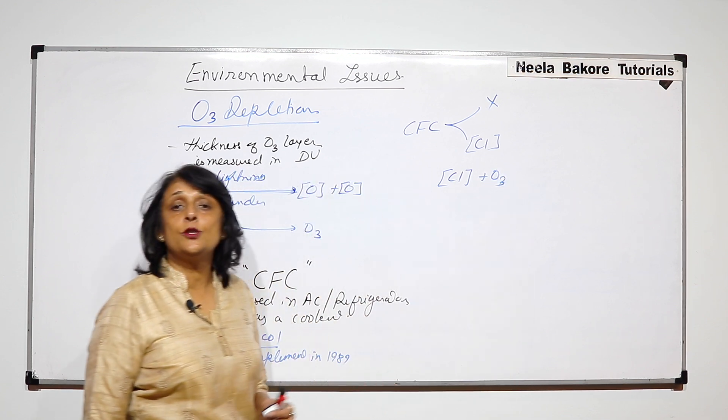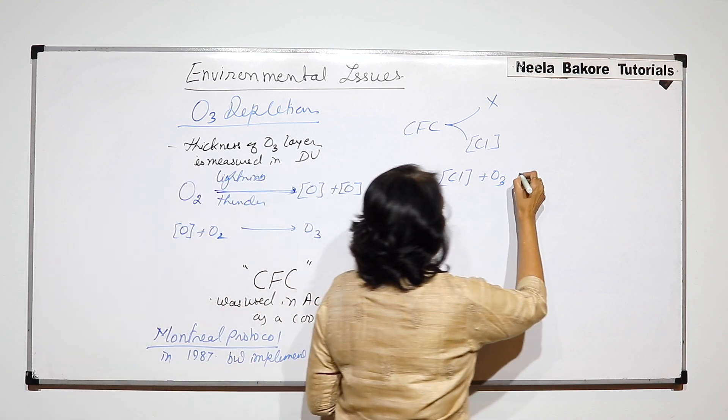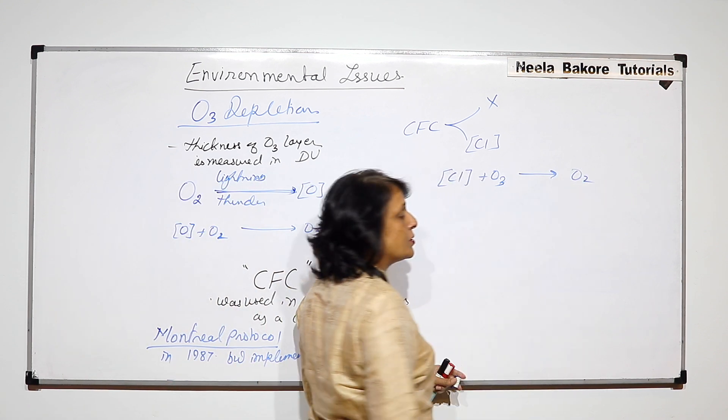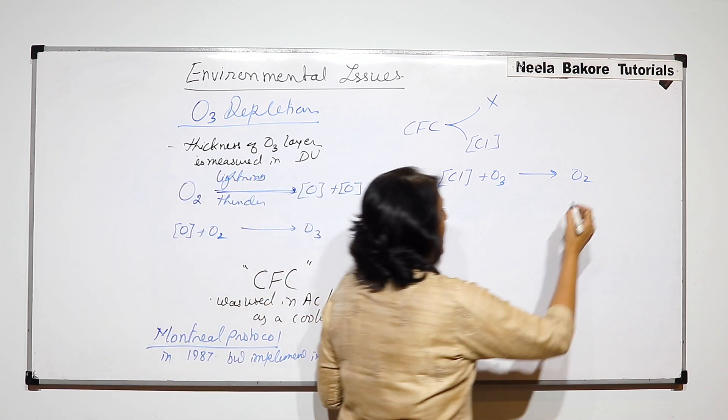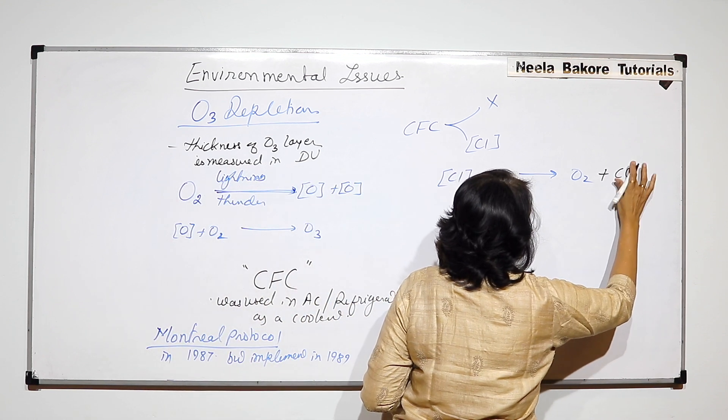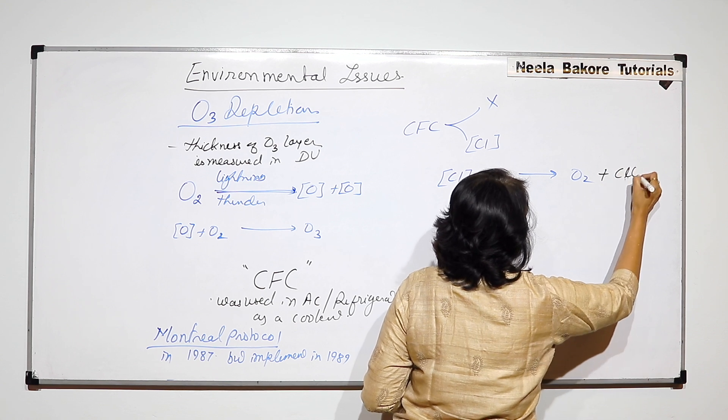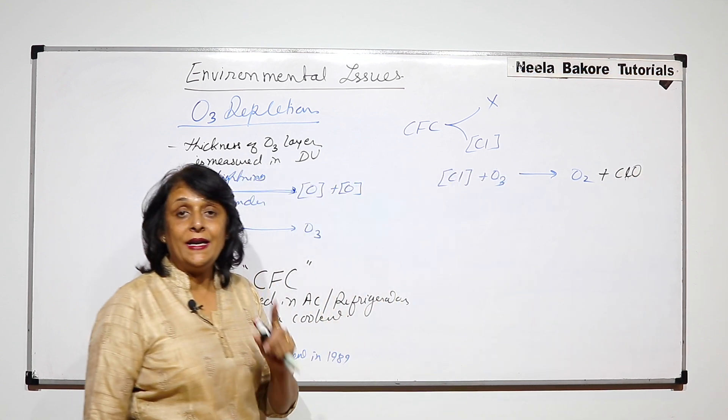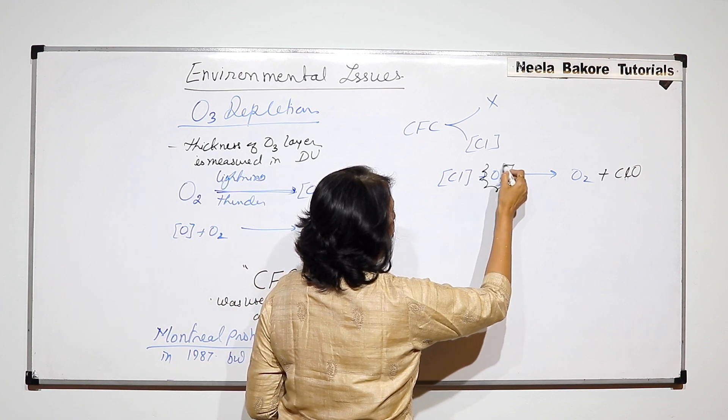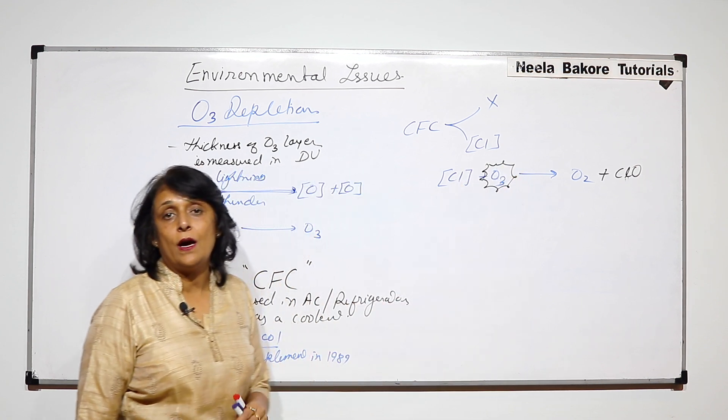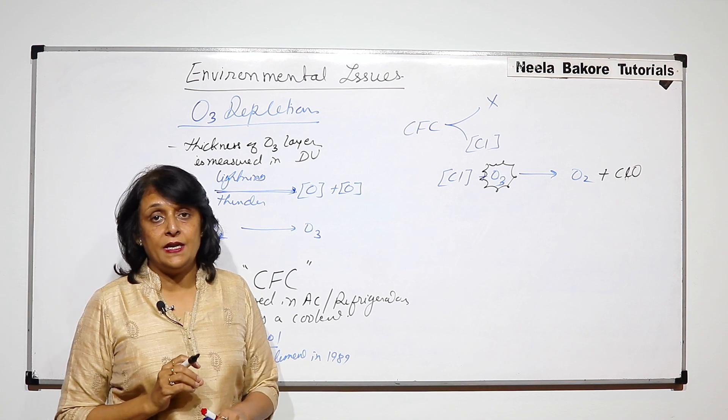This reactive chlorine atom reacts with ozone. When it reacts with ozone, it forms molecular oxygen, which is a good part, nothing harmful, and oxide of chlorine, ClO. But in this process, one molecule of ozone has been broken down. That means it is depleted.